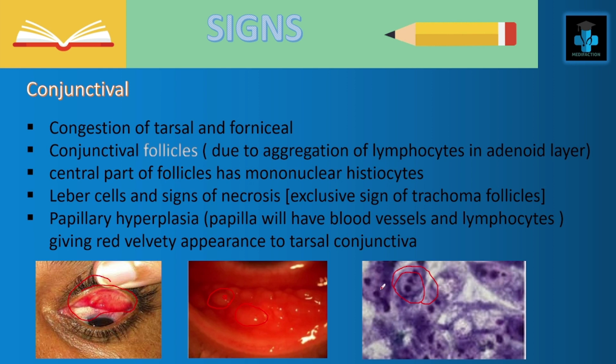Next we have papillary hyperplasia, because the papilla will have blood vessels and lymphocytes, giving a red velvety appearance to the tarsal conjunctiva as you can see here.